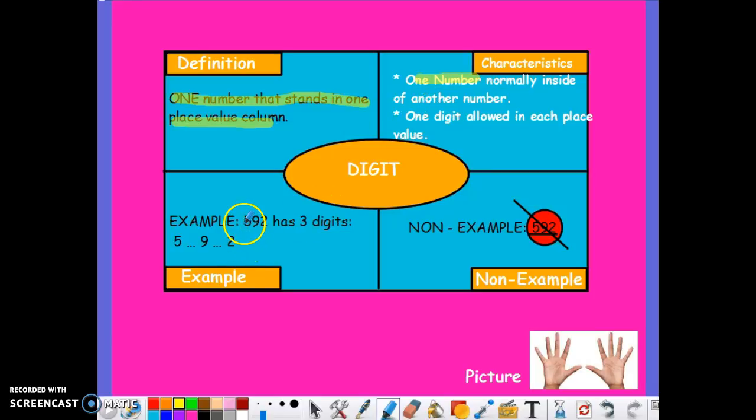For example, the full number 592 has three digits inside of it: 5, 9, and 2. Each individual number in its own place value, the 2 in the ones, the 9 in the tens, and the 5 in the hundreds, are each digits.